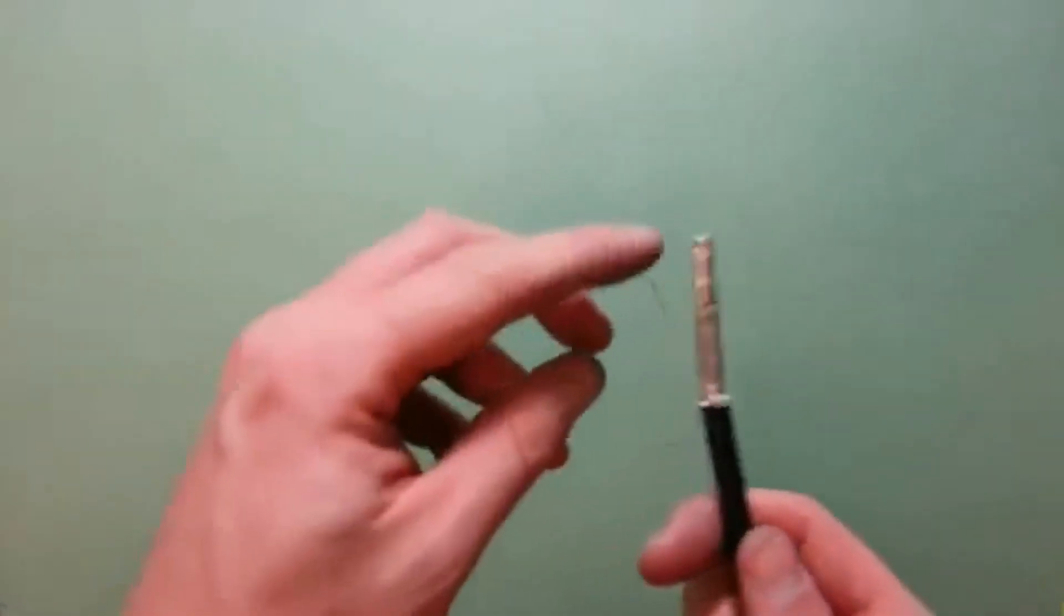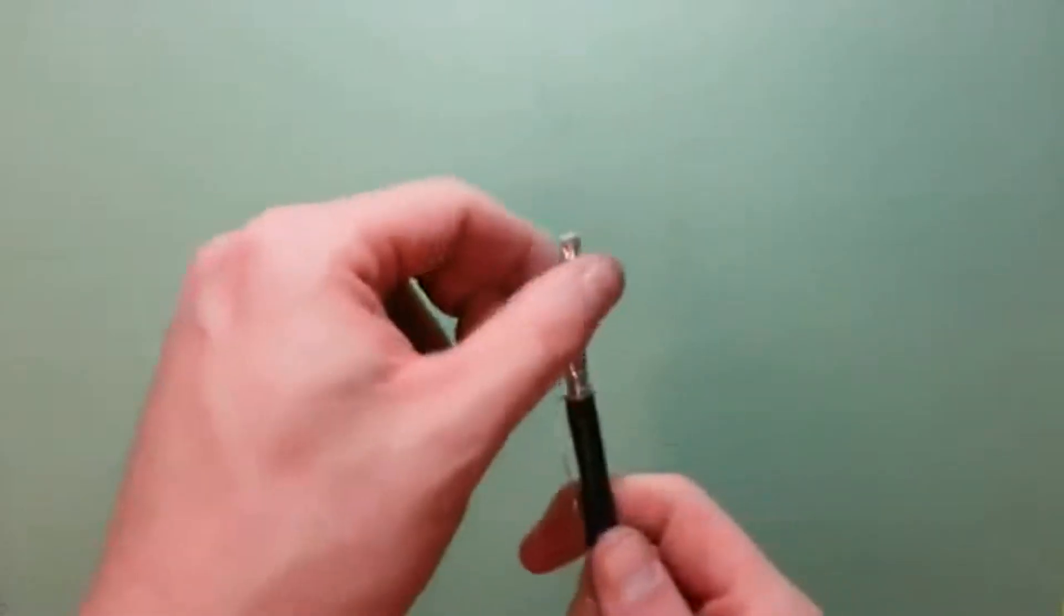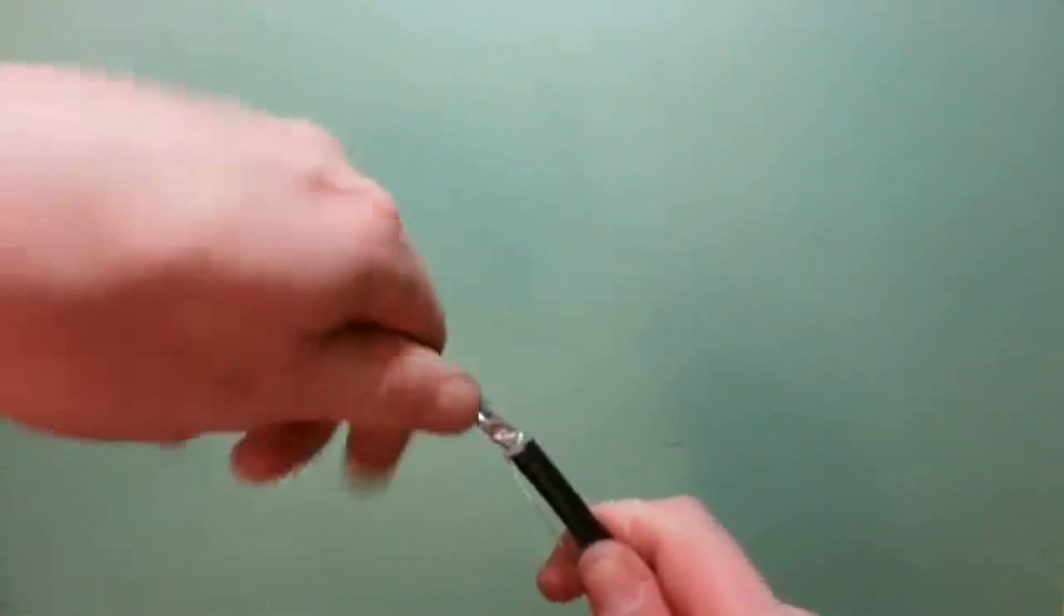Fold the ESD drain wire back and unwind the foil shield, then fold it back as well.